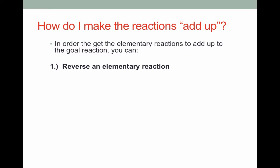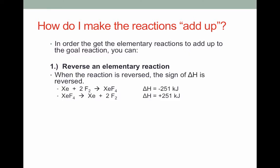You can reverse an elementary reaction. In other words, you can write the reactants as the products and the products as the reactants. Notice here we started with XE plus 2F2 yields XEF4. The reverse of that is XEF4 yields XE plus 2F2. If we're going to switch the reaction, we also have to switch the sign on the delta H. If 251 kilojoules of energy are released in the first version of the reaction, if we flip the reaction around, it's going to absorb that same amount of energy. So our delta H changes its sign.